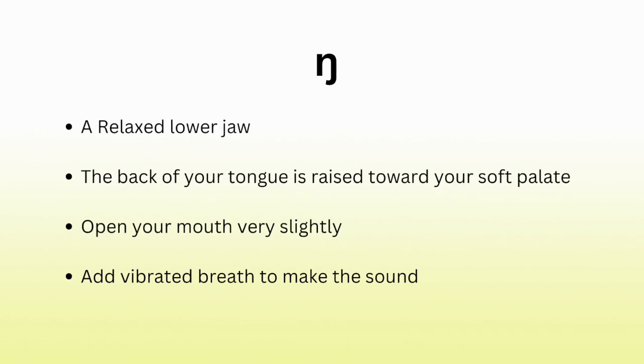And now we are going to move on to the next nasal continuant, ng. It's very similar to the n sound and often gets replaced by the n sound in certain dialects, but it's slightly different. In English, you're never going to hear the ng sound at the beginning of a word — you'll only ever hear it in the middle or at the end of words. The mechanical placement for the correct pronunciation of ng is a relaxed lower jaw; the back of your tongue is raised toward your soft palate. You open your mouth very slightly, and you add vibrated breath to make the sound. It's different from the n sound because with n the front of your tongue is up, and with ng the back of your tongue is up. That's the proper placement for the consonant ng. Now let's just try saying it a few times: ng, ng, ng.